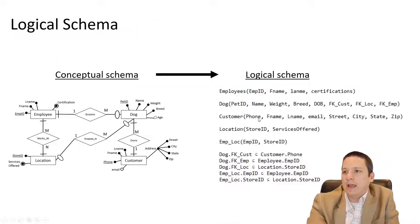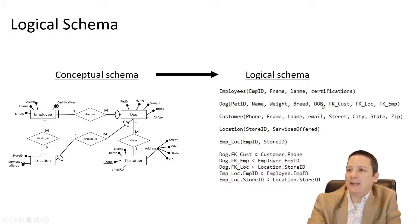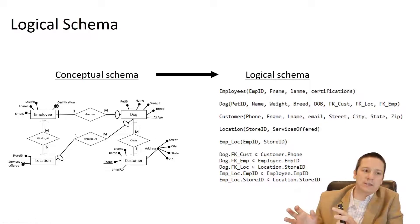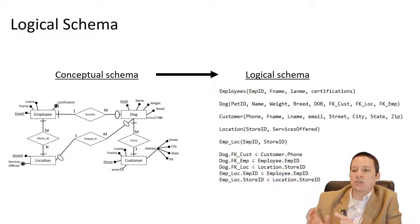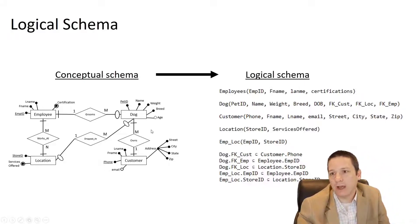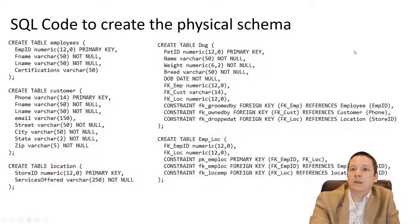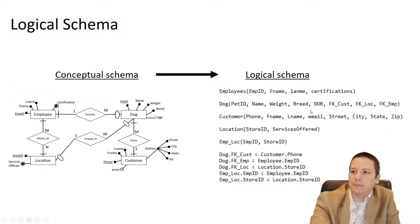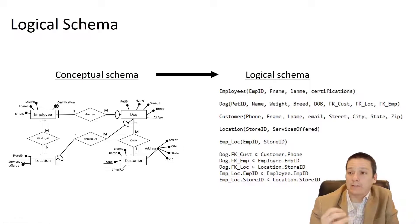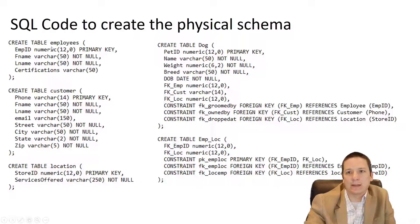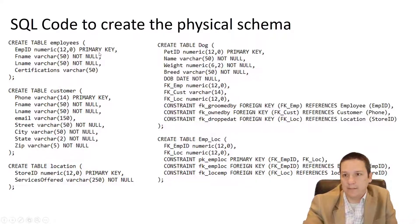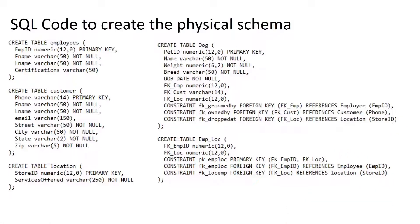From here, we take our conceptual schema and create our logical schema, which is a text version of our conceptual schema. This gets us much closer to the SQL code — our data definition language code — that we're going to use to actually create the tables and relationships in the database. This is a transition from the graphical to the code. The next step is writing our SQL code, our data definition language code, to create the physical schema. We basically take our logical schema and add in special keywords and commands in SQL to actually create the tables.